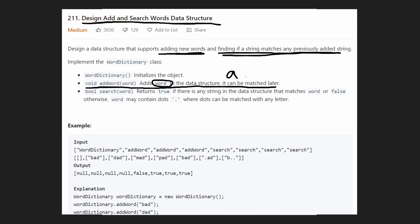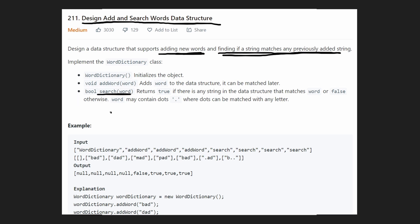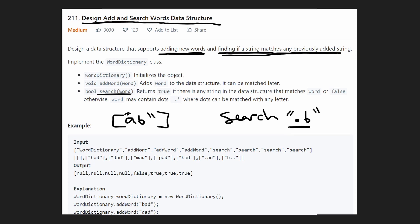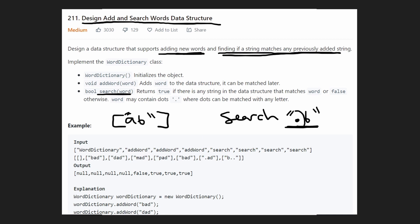The word being added can only consist of lowercase characters from a to z. The search function is where the bulk of the algorithm is. The search word can also contain any lowercase character, but there's one additional character: a dot, which acts as a wildcard matching any character. For example, if our word list contains 'ab' and we search '.b', the dot matches any first character, so it matches 'a', returning true.